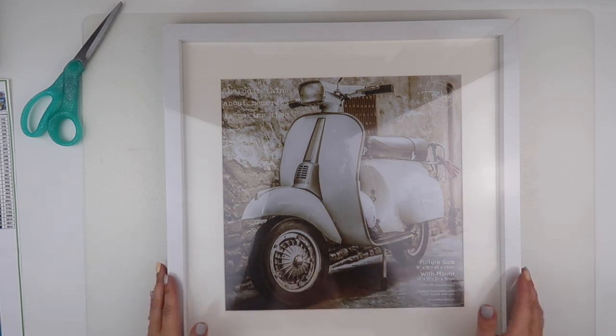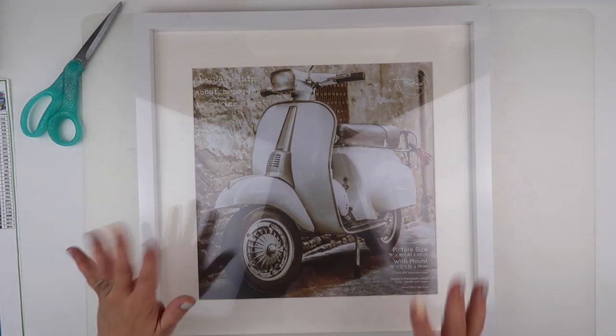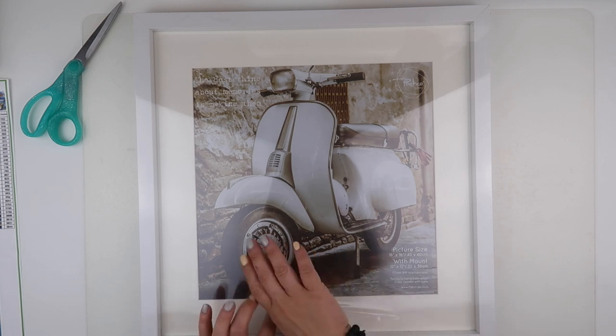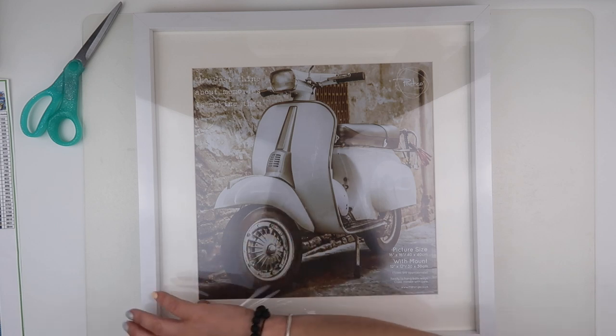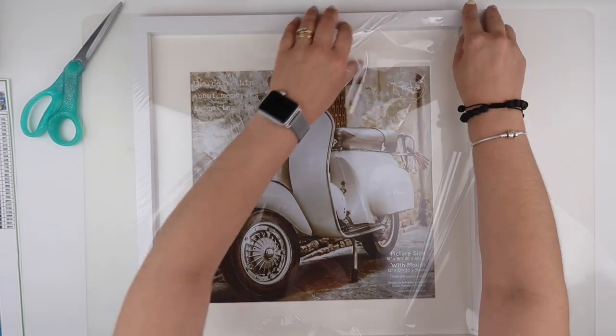Hi and welcome to my channel, it's Rebecca, also known as 4kids at 147. I'm going to show you a couple of framing options in this video. I've got this frame - it's a 40 by 40 with a 30 by 30 mount. I bought this one from the range a while ago, so I can't remember exactly how much it is.